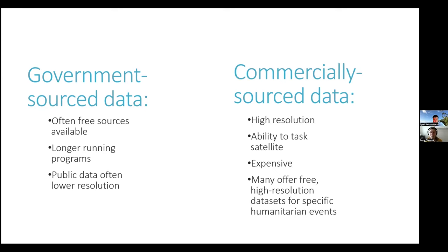Government source data often has free sources available and very long-running programs — we have satellite imagery going back to the 80s that's public. It's typically lower resolution. Commercially sourced data can be very high resolution, less than a centimeter, and they provide the ability to task satellites. It's very expensive, but companies like Maxar, Airbus, and Planet provide this data for free for humanitarian purposes or in response to a specific event like Pakistan's flooding or Hurricane Ivan.